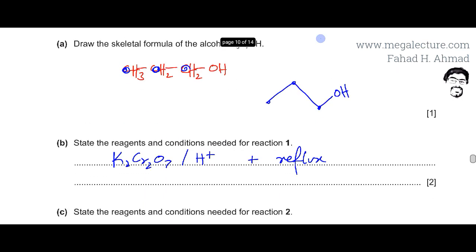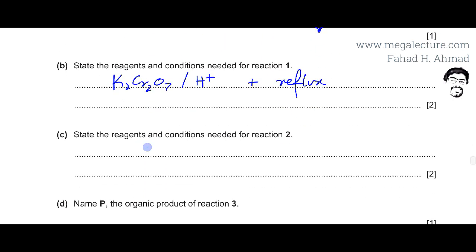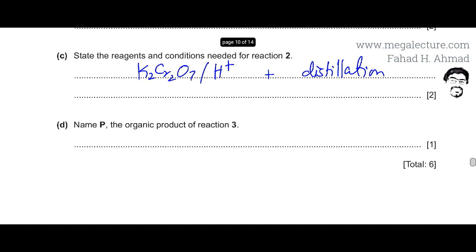So the conditions are going to be exactly the same. They're going to be K2Cr2O7, potassium dichromate(VI) acidified. But instead of reflux, you will be using distillation because distillation would help us remove the aldehyde very quickly and that would be taken out of the container. Let's move to the next part.